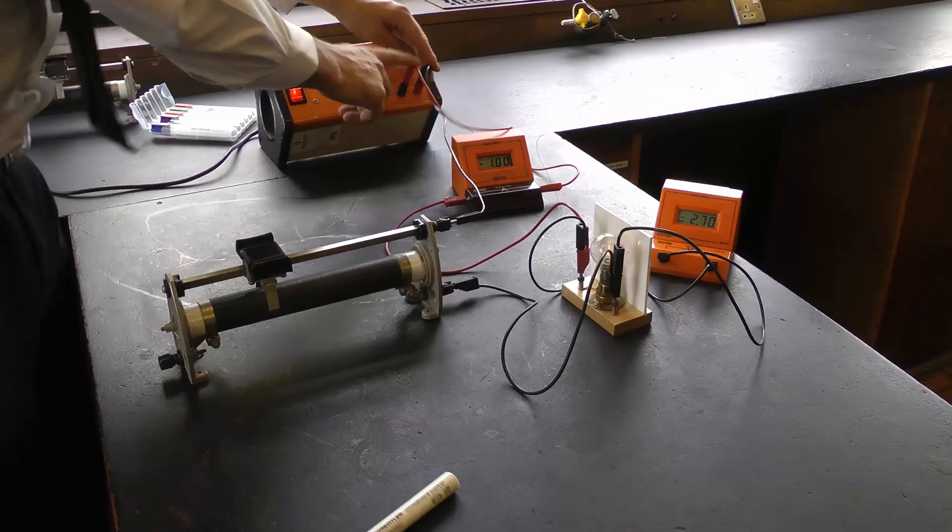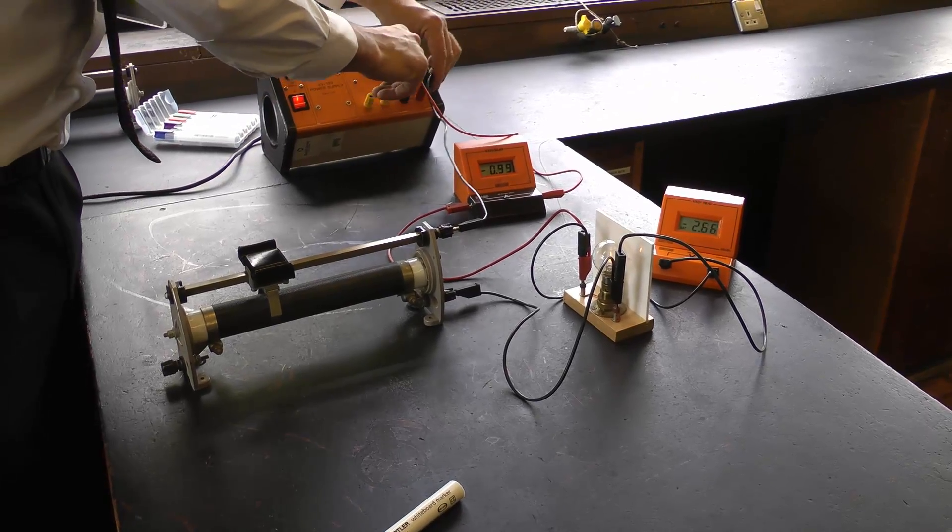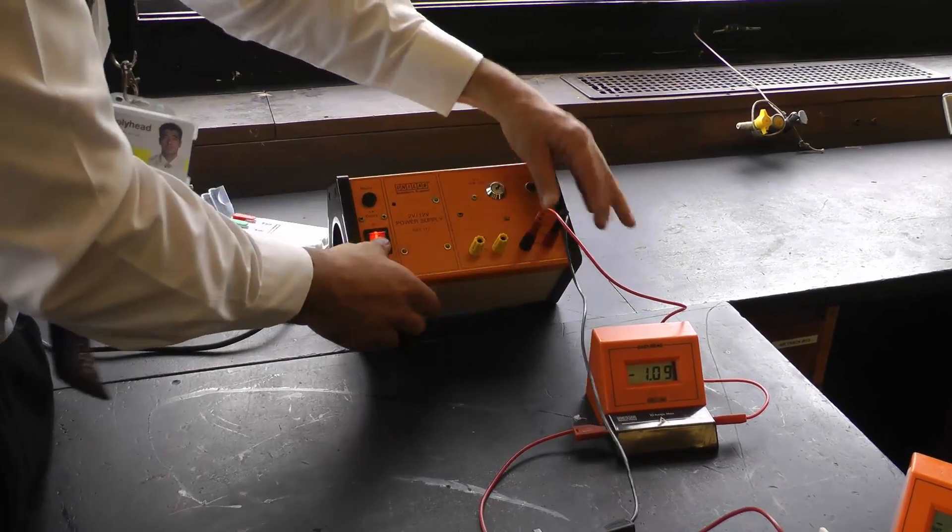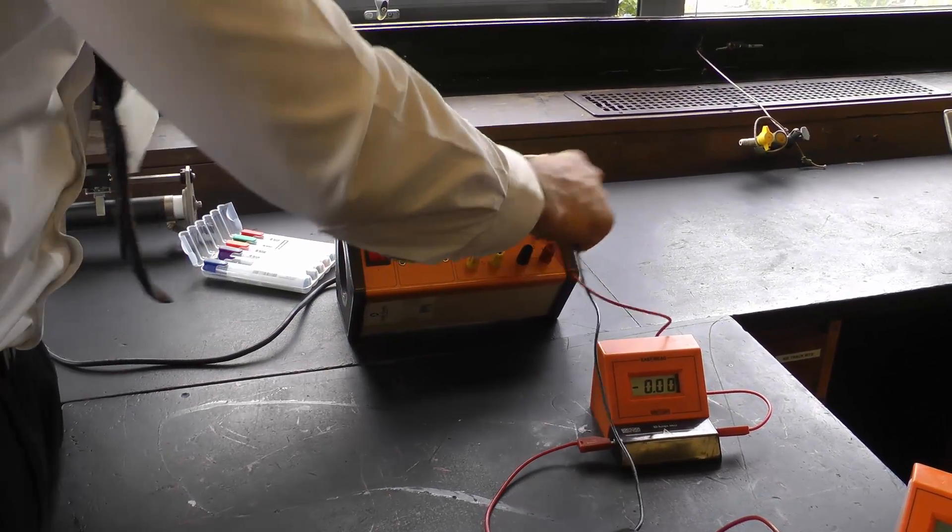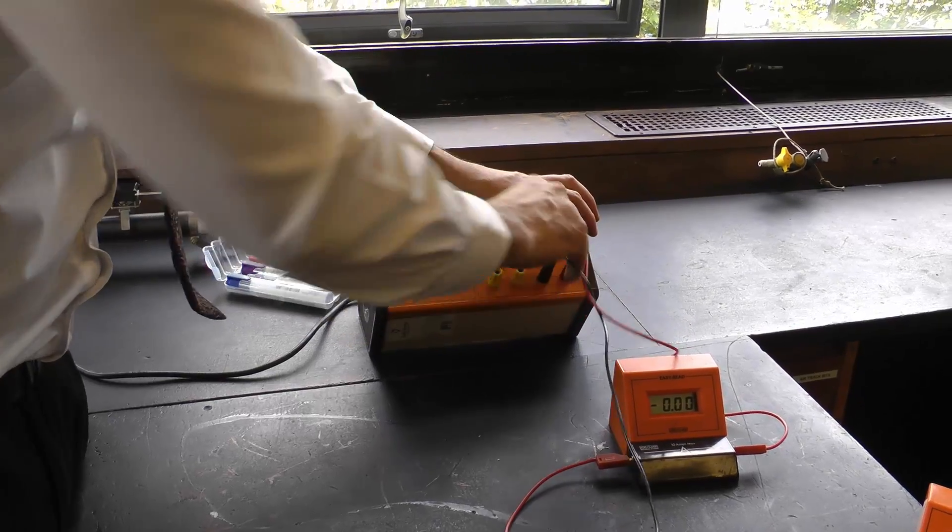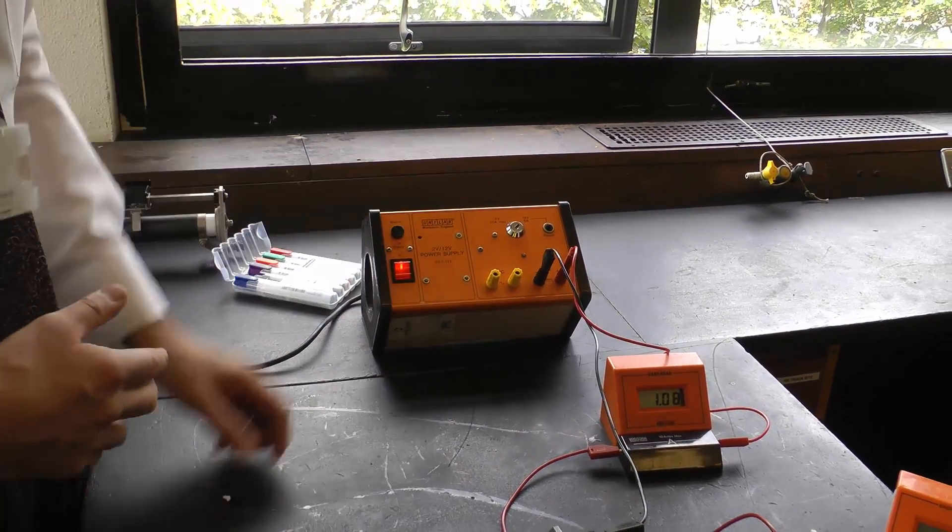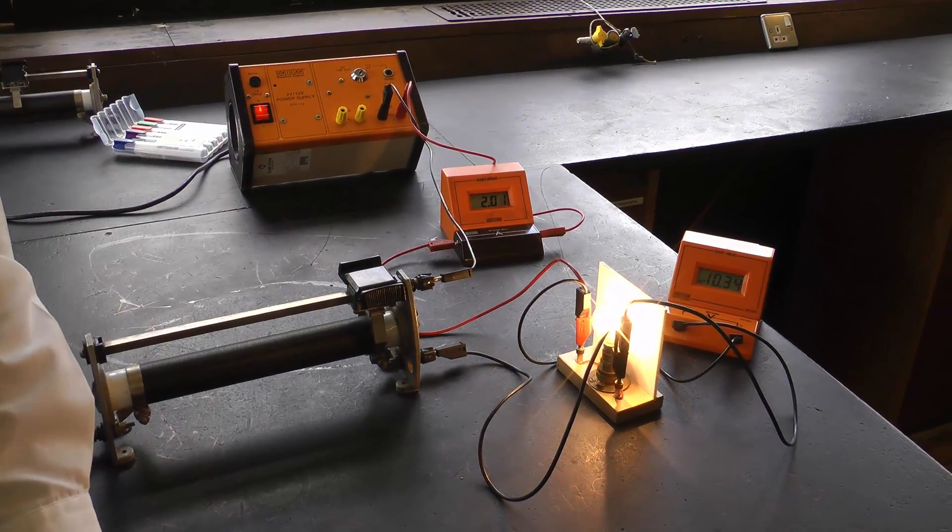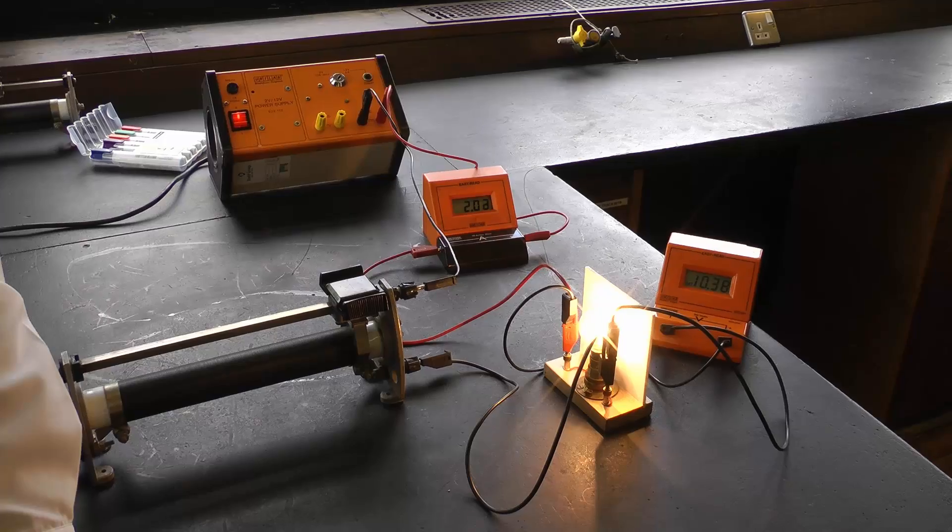We're going to switch the polarity round. Better switch off the pack first, switch the polarity round so we can do the positive values now. Start at the max again.